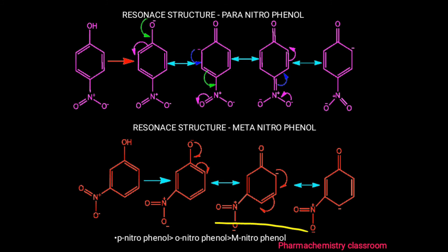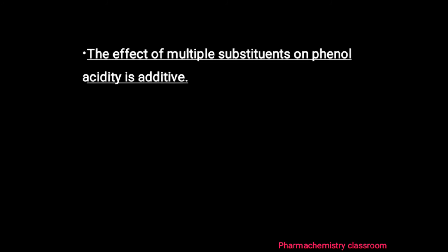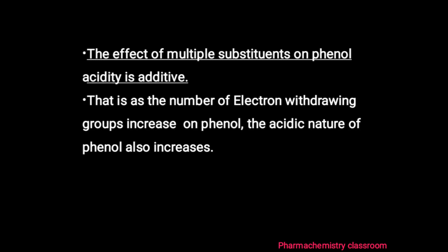Comparing the acidity of nitro-substituted phenols: para-nitrophenol is more acidic than ortho-nitrophenol, which is more acidic than meta-nitrophenol. Ortho-nitrophenol is less acidic than para-nitrophenol due to intramolecular hydrogen bonding present in ortho-nitrophenol. The effect of multiple substituents on phenol acidity is additive — when there are more electron-withdrawing groups, the acidity increases further. A phenol with two electron-withdrawing groups will be more acidic than one with only one electron-withdrawing group.